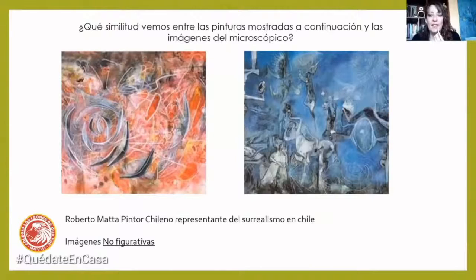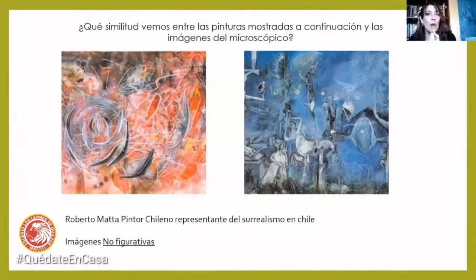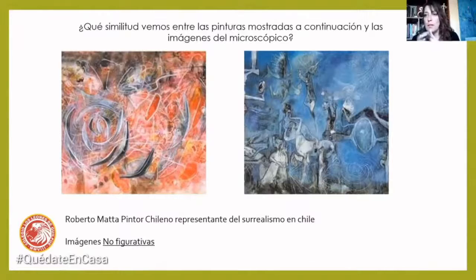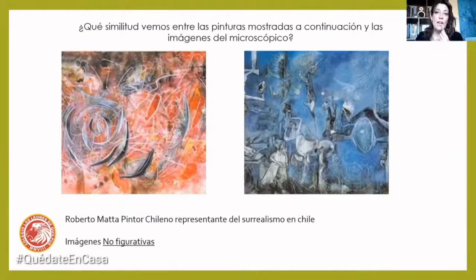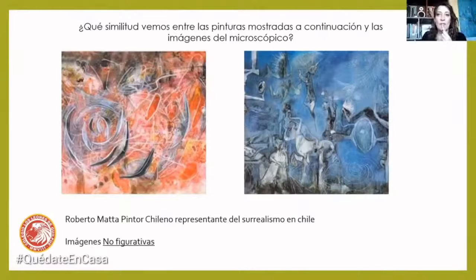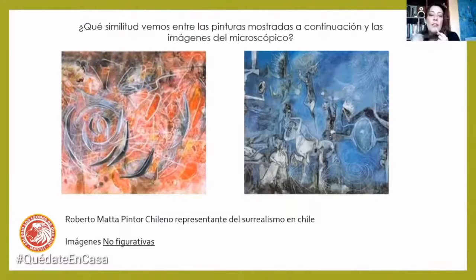Aquí viene una parte súper interesante: la similitud de estas imágenes con las pinturas de algunos artistas. ¿Qué similitudes vemos entre las obras que estamos viendo ahora y las imágenes que vimos recién del microscopio? Las obras que estamos viendo son de un pintor que se llama Roberto Matta y es uno de los mayores representantes del surrealismo en Chile. El surrealismo es una corriente artística donde las cosas no están tal cual las presenta la realidad, donde todo es relativo, donde está todo en la imaginación, le dan espacio a los sueños, y hay mucha metáfora visual.